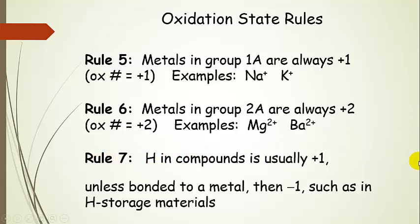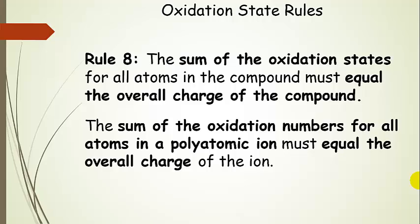Rule 7 involves hydrogen. Hydrogen in compounds is almost always plus 1, but if it's bonded to a metal, then it's going to be minus 1 — you'll find that kind of situation in hydrogen storage materials. Rule 8 is the rule you use to figure out everything that does not have a specific rule for it. The sum of all the oxidation states for all atoms in the compound must equal the overall charge of the compound. The same goes for polyatomic ions — add up all the oxidation numbers and it must equal the charge of the ion. This is the rule you use after rules 1 through 7 to solve for whatever you can't assign directly.